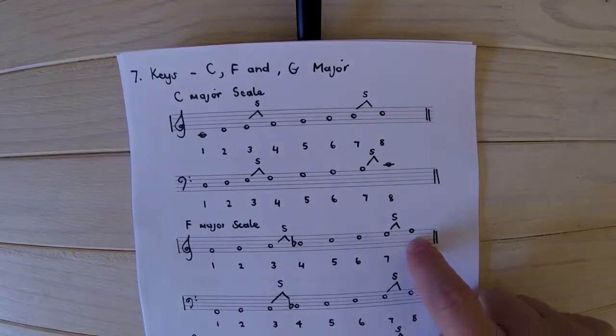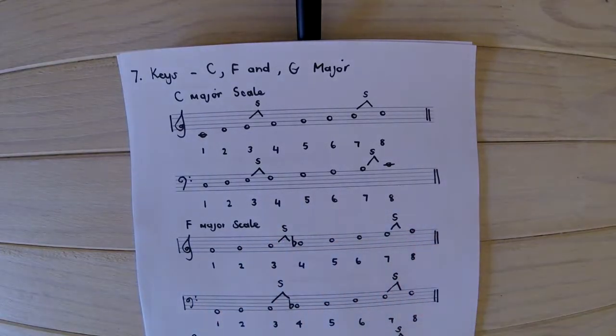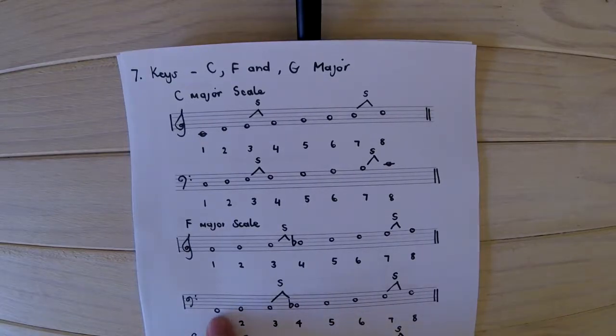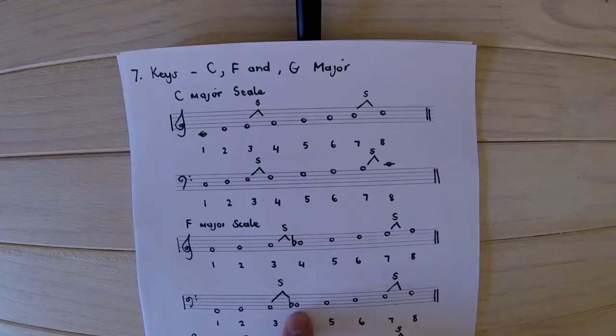Descending, we start on the top note and we write it down. For the left hand, we start on F just below the stave and we're going to write it up, remembering to write our B flat for F major.